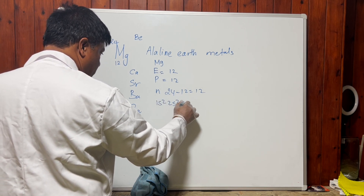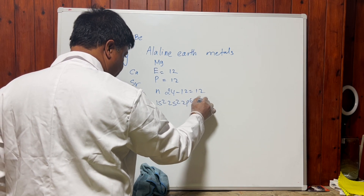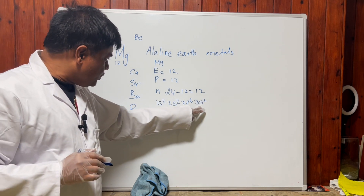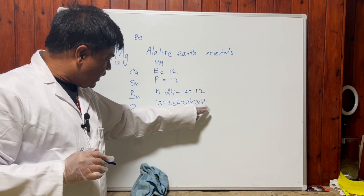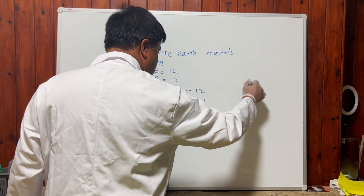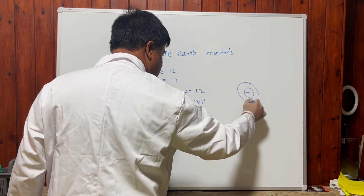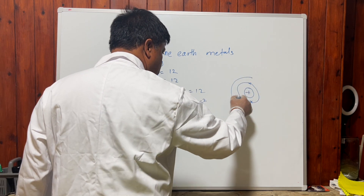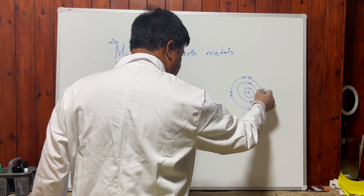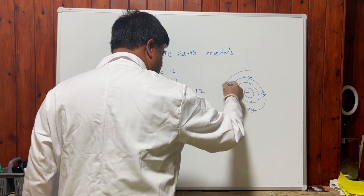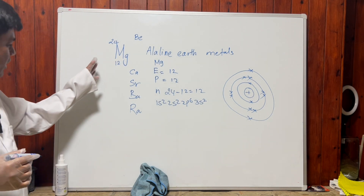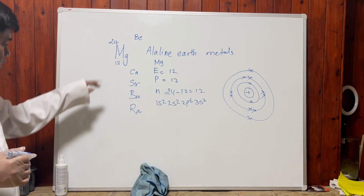Now let's write the electronic configuration of magnesium: 1s² 2s² 2p⁶ 3s². You can ask: why is it placed in group 2? Look — it has two extra electrons in the outer shell. The first shell has two electrons, the second shell has eight electrons, and the third shell has two electrons. So the outer shell has two electrons — that's why magnesium is placed in group 2.